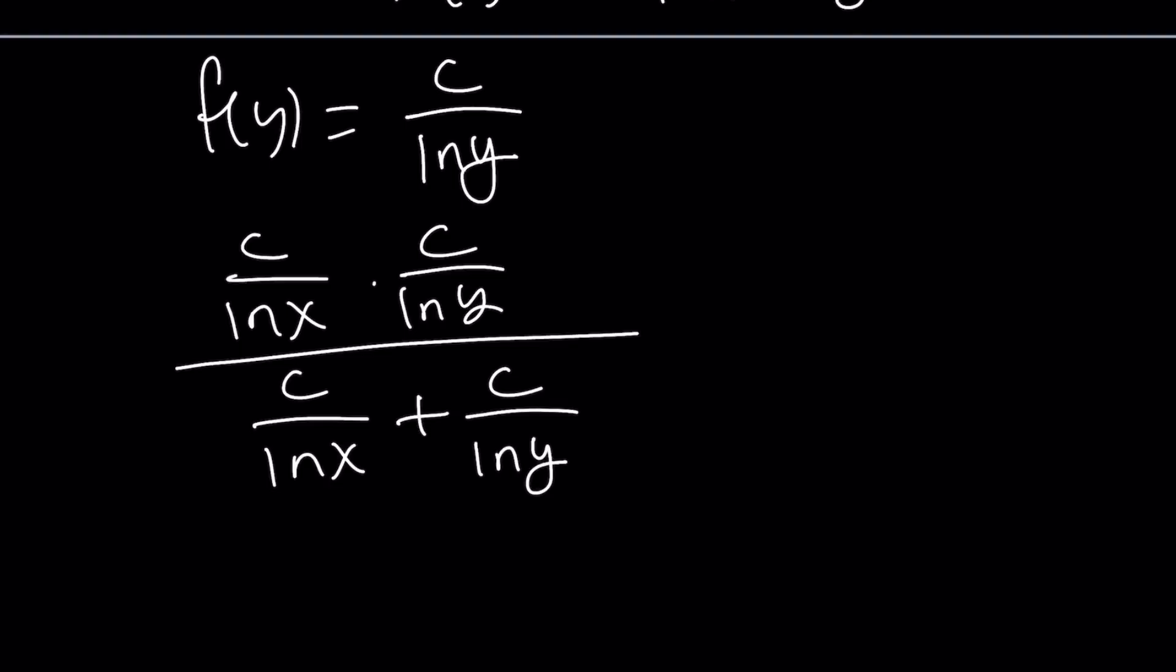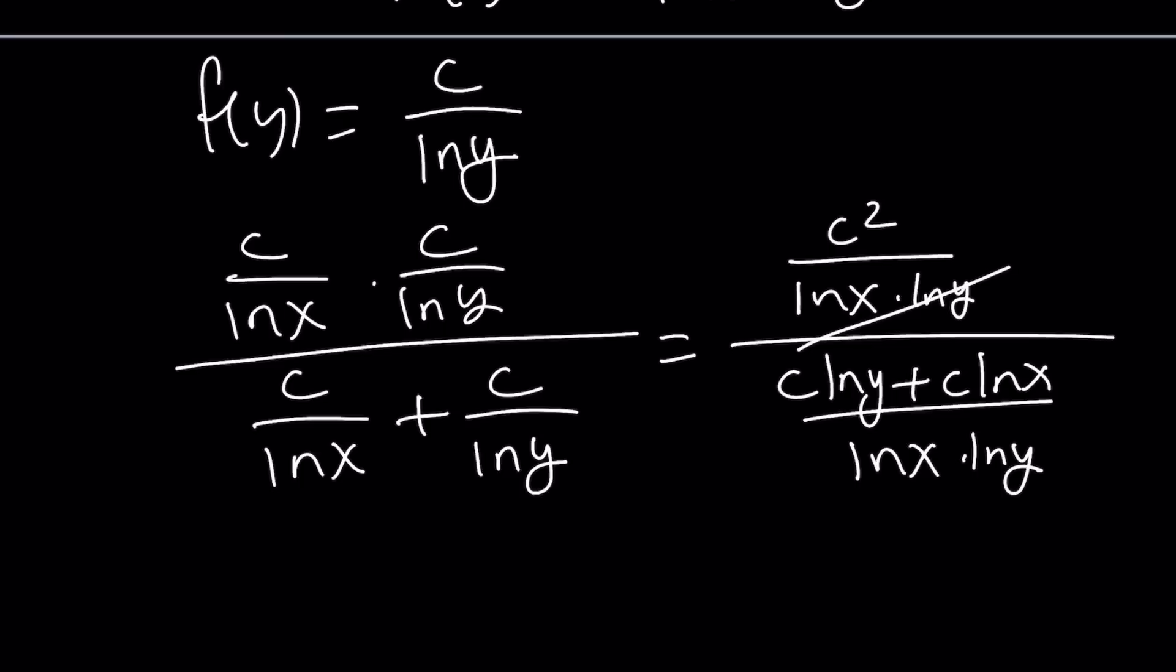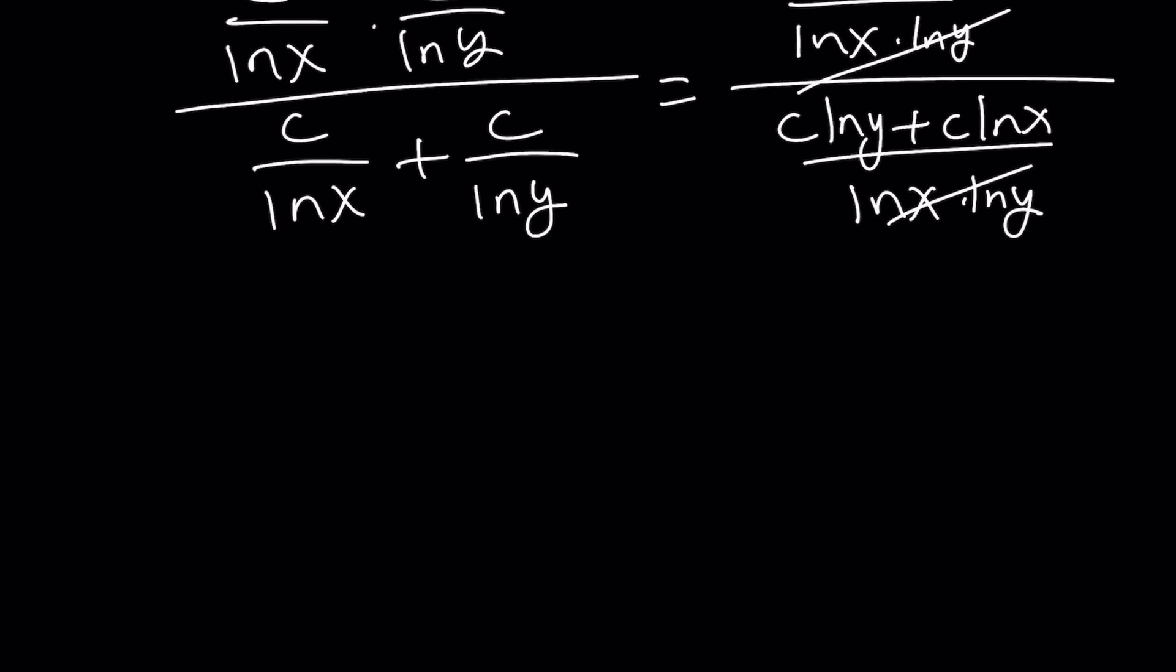Now, since we don't have a common denominator, let's go ahead and make one. This becomes c squared over ln x times ln y. And the bottom is just going to be c times ln y plus c times ln x divided by ln x ln y. If we flip and multiply, these two terms are going to cancel out. And we can also take out a c here, ln y plus ln x. One of the c's will cancel out.